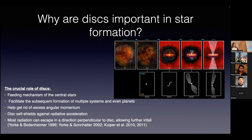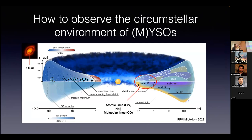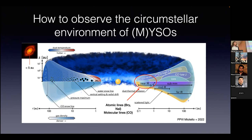Looking more closely at how a protoplanetary disk looks: we have the central source in the middle, then a gaseous disk around it, because dust cannot survive above 1500 Kelvin. Further away we form a dusty disk extending out to 100 AU or even 1000 AU depending on the case. Depending on what we want to study, we need different wavelengths. To study the dust or the outer part of the disk we go to sub-millimeter or millimeter observations, but to probe closer to the star we need near-infrared wavelengths and higher angular resolution.